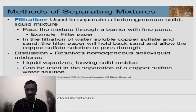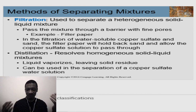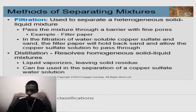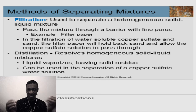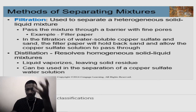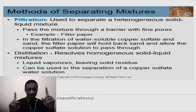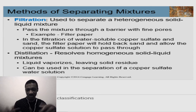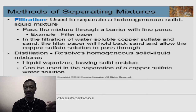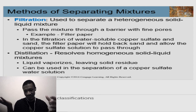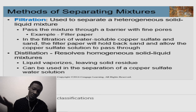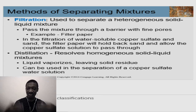The first method on the list is filtration. When we have a heterogeneous solid and liquid mixture, the way to separate it is to filter. In filtration you have a membrane with pores that allow the passage of liquid and hold back the solid. For example, with copper sulfate and sand: sand cannot dissolve in water but copper sulfate can, so you filter the solution and sand is left behind while copper sulfate solution passes through.